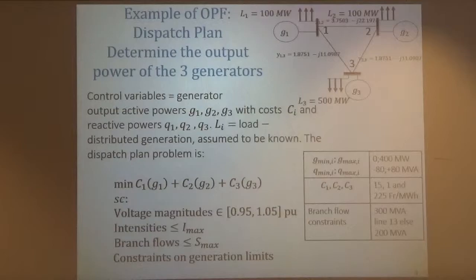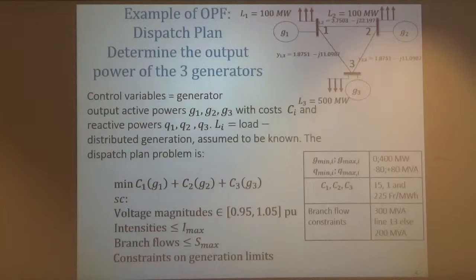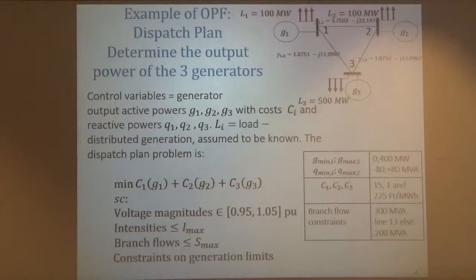I'm assuming there's 300 megawatts of apparent power maximum capacity on one line, and 200 on the other two lines. This is the apparent power — it has an active and reactive component — so people will often say MVA instead of megawatt. The only things I want to minimize are the costs of running those three generators, which have costs of 1, 15, and 225 per unit of megawatt hour respectively. Generator two is cheap, generator one is very expensive, and generator three is extremely expensive.